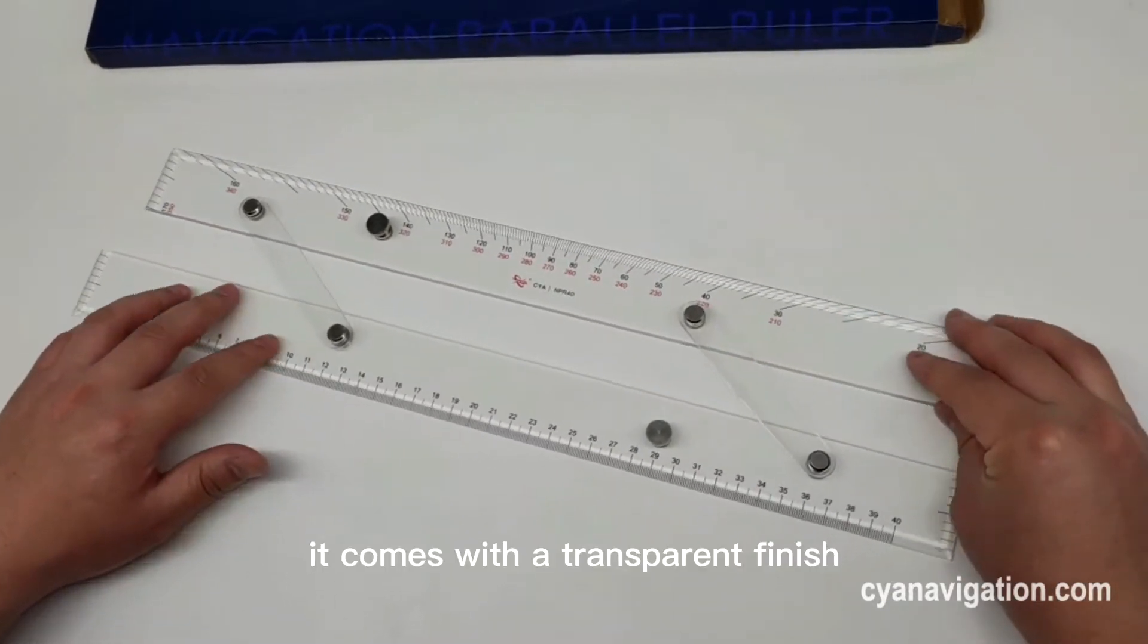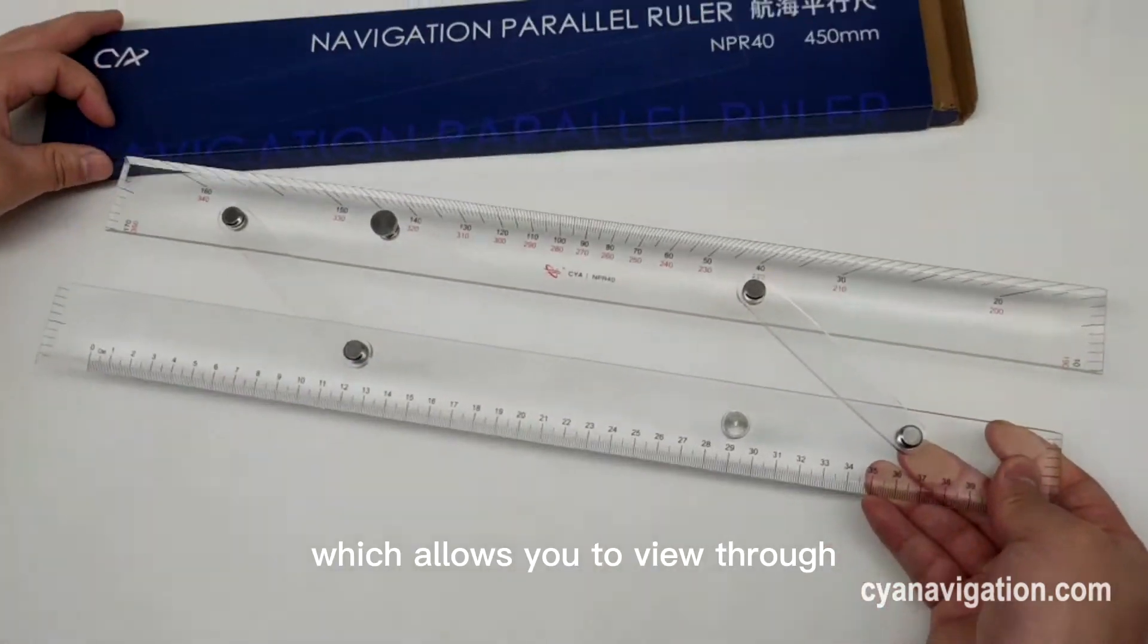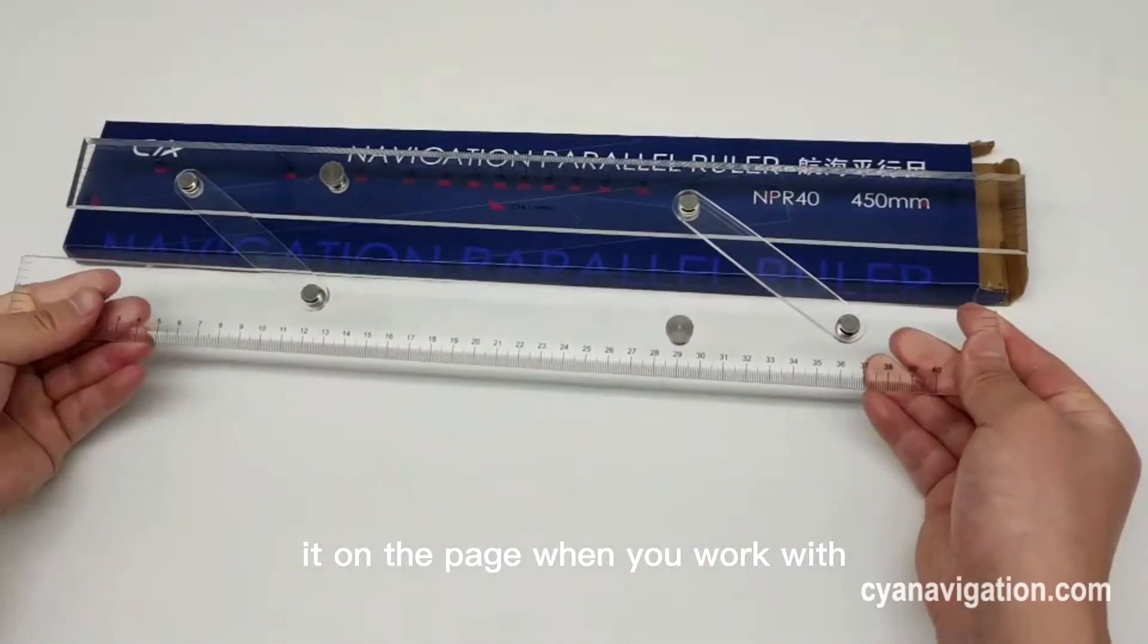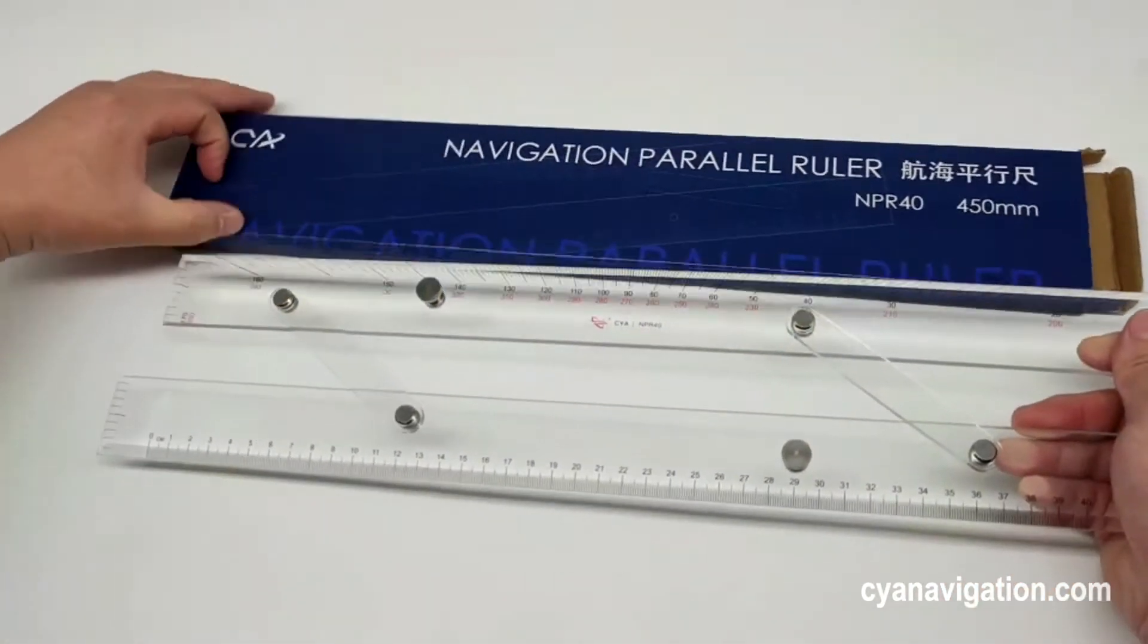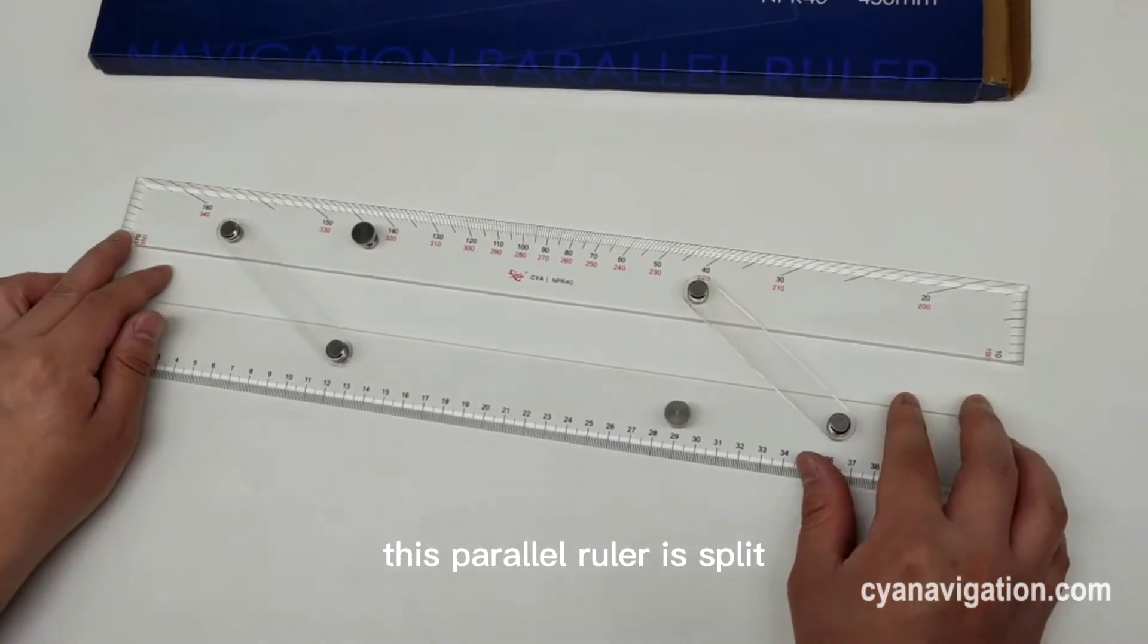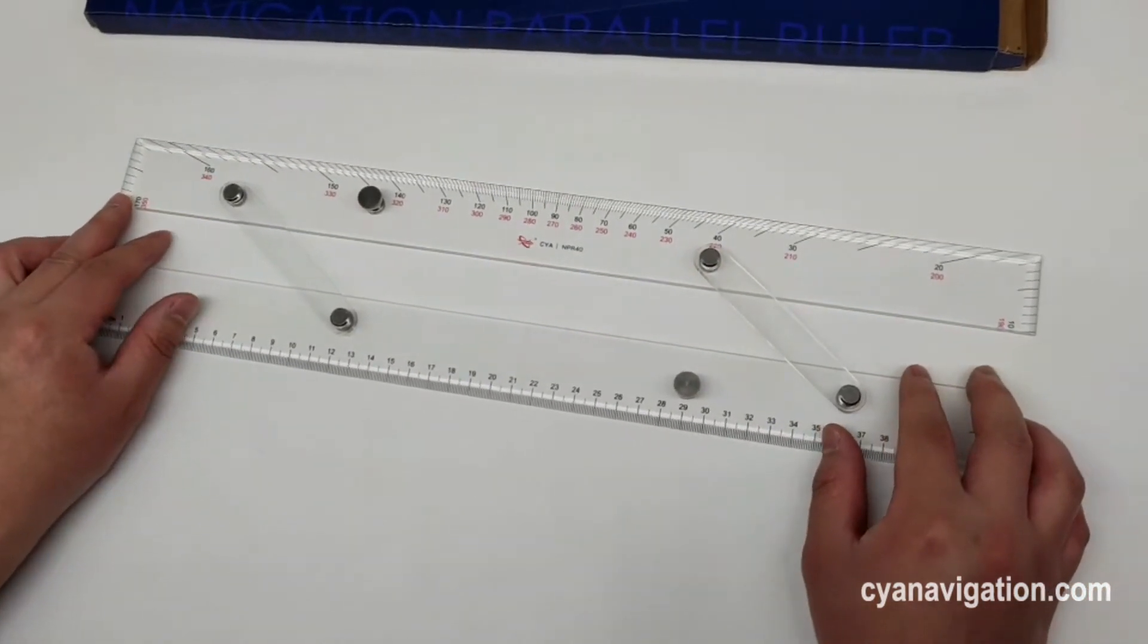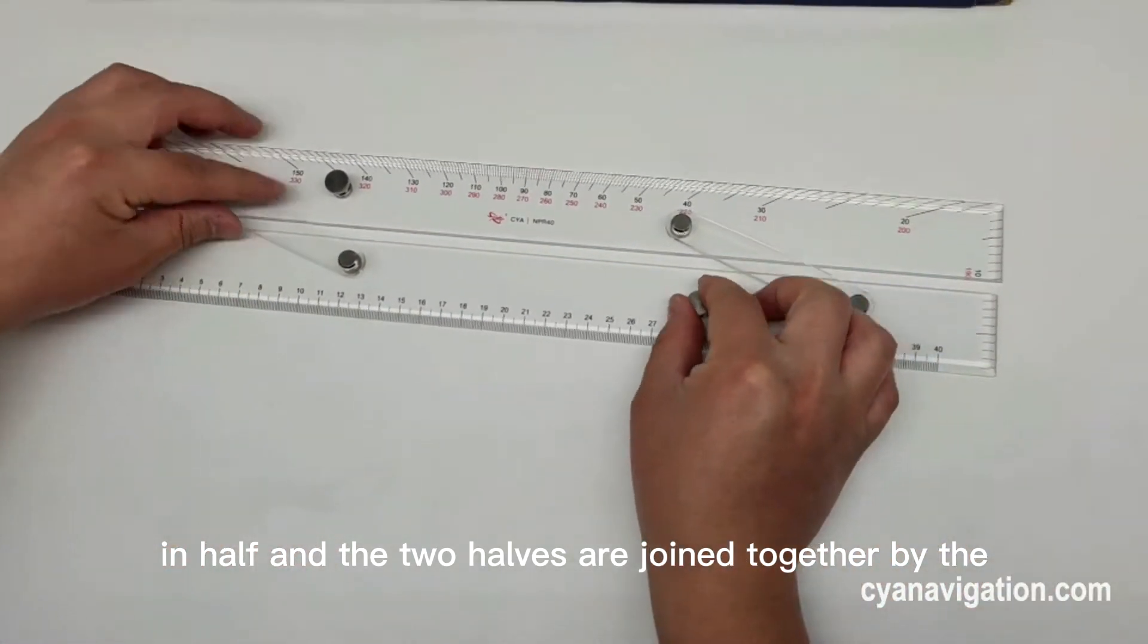It comes with a transparent finish which allows you to view through it on the page when you work with the non-skid pads or non-magnetic pads. This parallel ruler is split in half and the two halves are joined together.